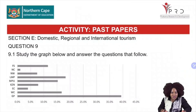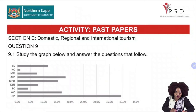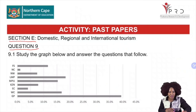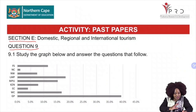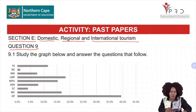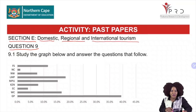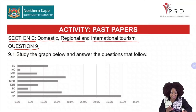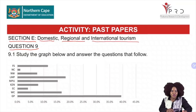Coming now to the revision of the past paper — we are busy with section E, question 9, which covers domestic, regional, and international tourism. What you want to know is what content is assessed in this section. I've already mentioned that you must expect questions on global events, unforeseen occurrences, political situations, forms of payment, and foreign market share. That is the content assessed in question 9, Grade 12 learners, and you cannot afford to lose those marks.